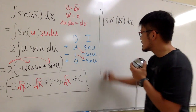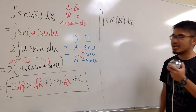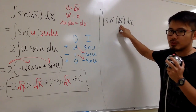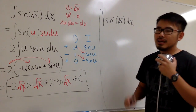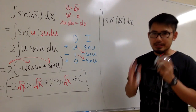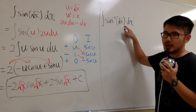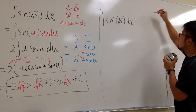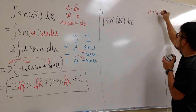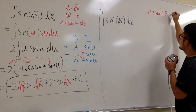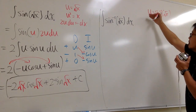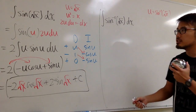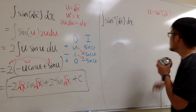Now let's look at its cousin — the inverse sine instead. You can still use the same strategy and let u equal to the square root of x, but it will take a few more steps. In this case, it will be easier if you let u equal to the whole thing — the inverse sine of the square root of x. Let me show you how to do that.